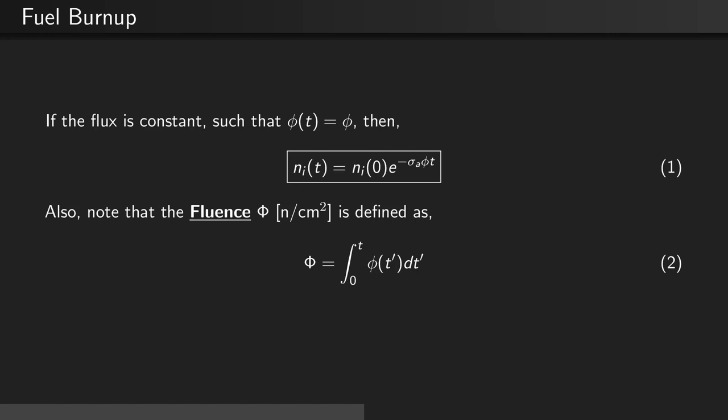Also note that the fluence, which is defined by upper case phi and has units of neutrons per centimeter squared, is defined as the time integral of the flux phi of t prime dt prime. So in other words, the fluence is a representation of how many neutrons a material has been exposed to since some time t equals zero.